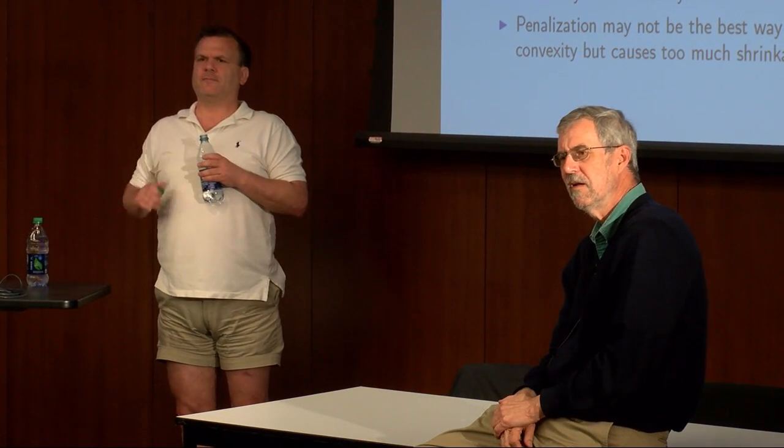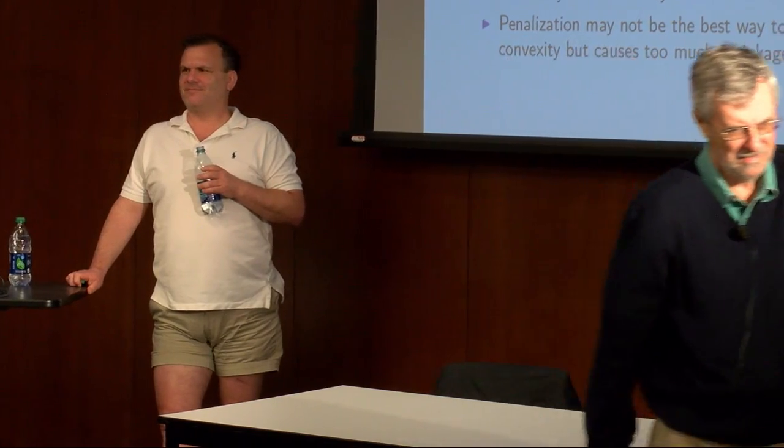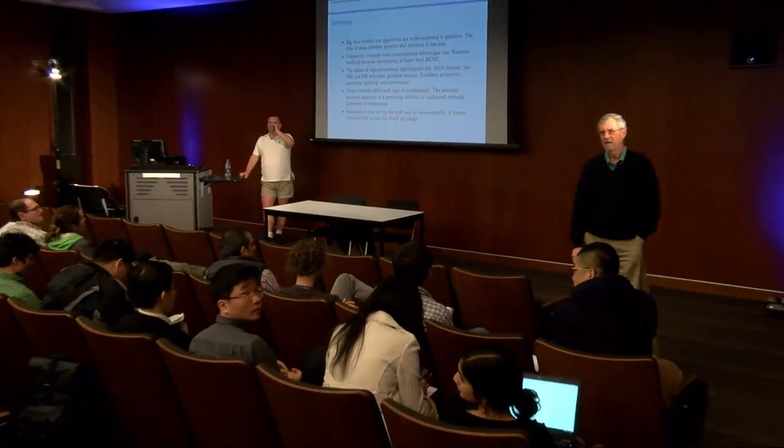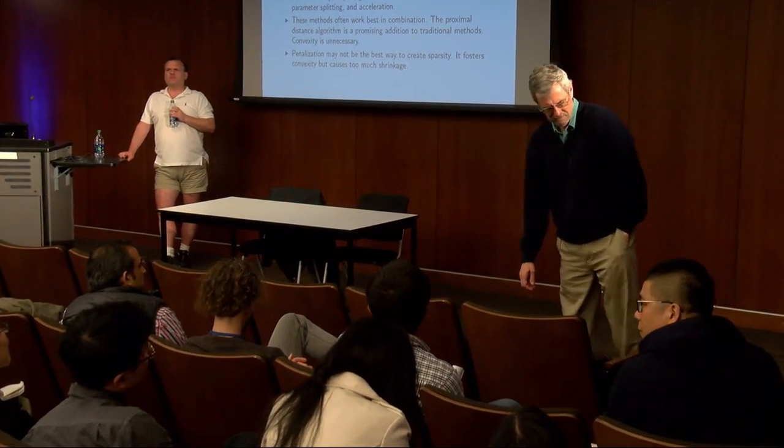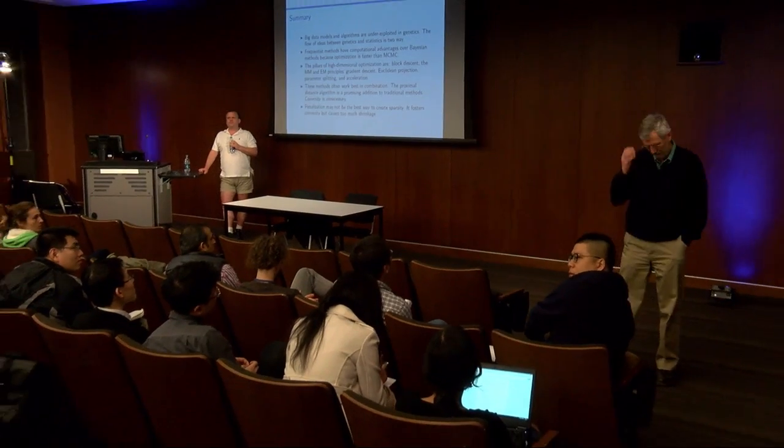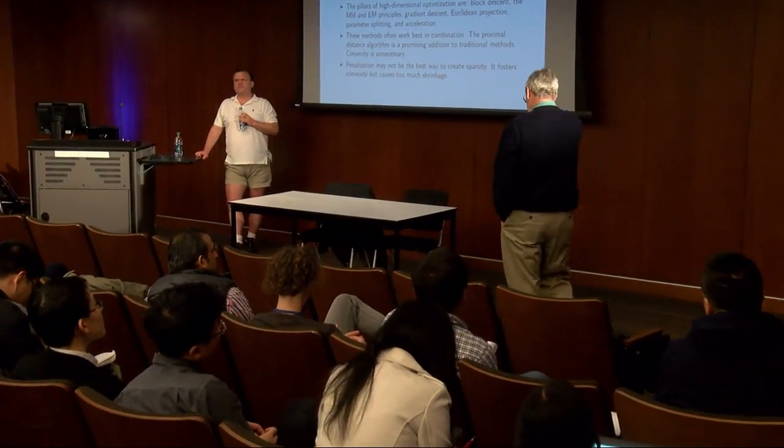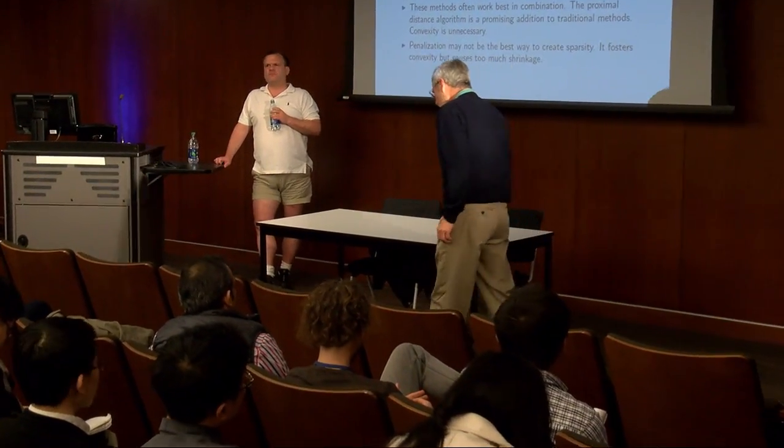Q&A: An audience member asks what the computation looks like concretely. The speaker says the goal is to do GWAS and genotype imputation on a desktop computer — hundreds of thousands of SNPs on tens of thousands of people. If you need a big cluster, you haven't thought about the problem long enough to devise the best algorithms.